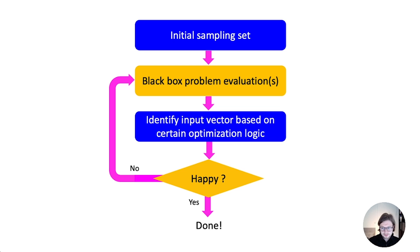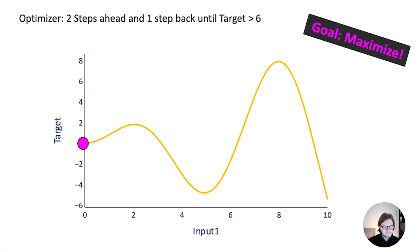I did a really simple example to end this video. I did my own optimizer here with the same function which always says: always go two steps ahead and then one step back, and I'm happy when my target value is above 6.